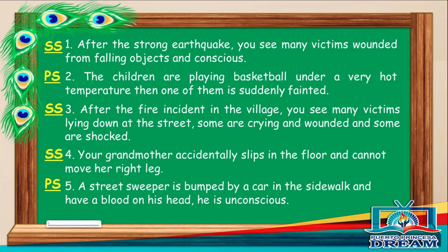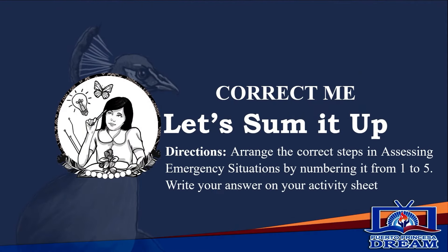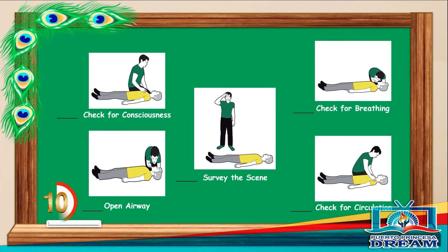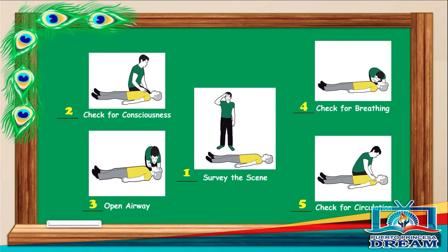Now that you have a clear understanding regarding the survey of the scene and victims, let's proceed to another activity. Arrange the correct steps in assessing an emergency situation by numbering it from 1 to 5. Write your answer on your activity sheet. You will be given 10 seconds to answer this activity. Time's up! Let's check your work! Did you get all the correct answers? Great job!